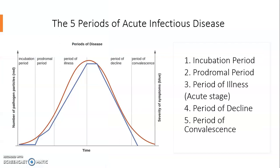There are five periods of an acute infectious disease. The first period is the incubation period. The second period is the prodromal period. The third period is the period of illness, also known as the acute stage. The fourth period is the period of decline, and the fifth period is the period of convalescence.